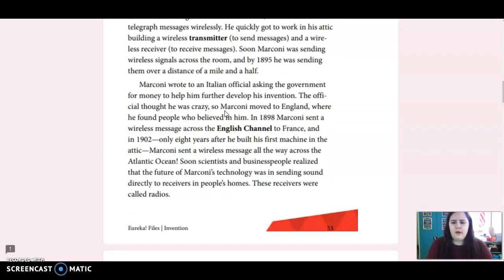Marconi wrote to an Italian official asking the government for money to help him further develop his invention. The officials thought he was crazy, so Marconi moved to England where he found people who believed in him. In 1898, Marconi sent a wireless message across the English Channel to France, and in 1902, only eight years after he built his first machine in the attic, Marconi sent a wireless message all the way across the Atlantic Ocean.